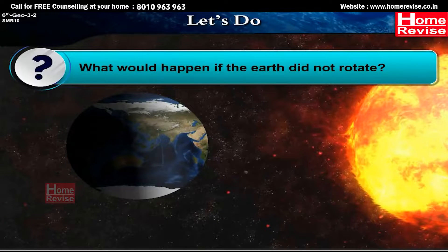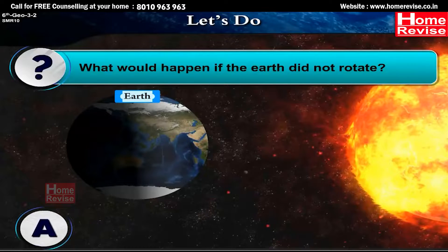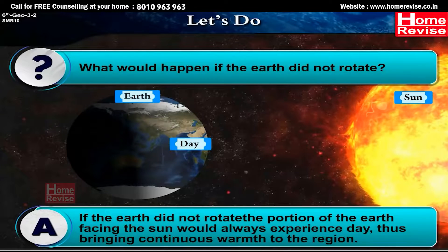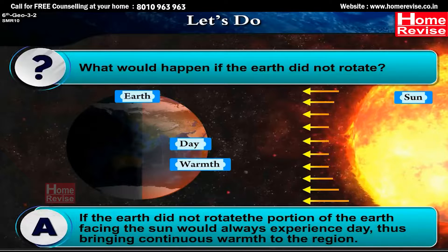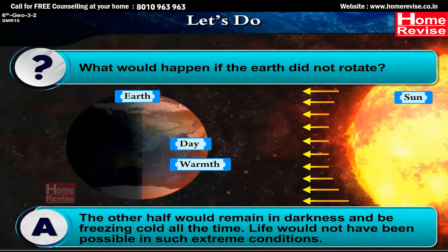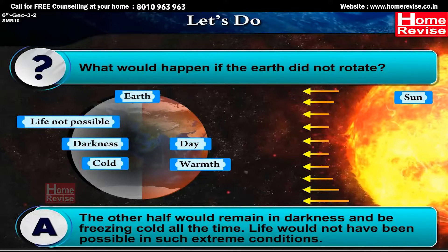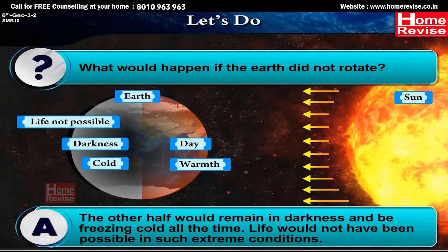What would happen if the Earth did not rotate? The portion of the Earth facing the Sun would always experience day, bringing continuous warmth to the region. The other half would remain in darkness and be freezing cold all the time. Life would not have been possible in such extreme conditions.